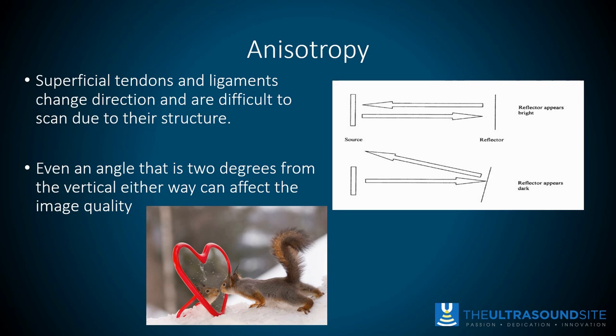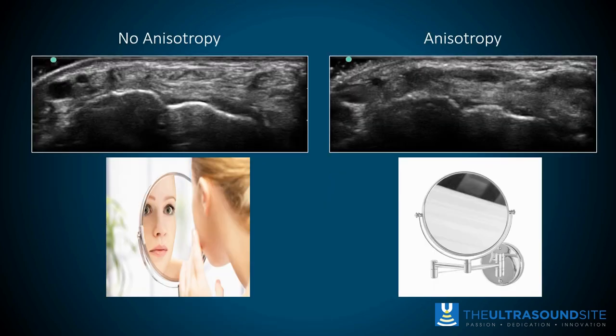Looking at this image in relation to anisotropy, the angle at which the sound beam hits will dictate whether or not it returns to the probe. We can liken this to looking in a mirror: if you look directly into a mirror, you see your face. But if you look at an angle, your face disappears and you see something several feet to the side, depending on the angle.